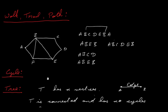A path, on the other hand, is a trail in which all the vertices are different — so you can't repeat vertices. I can go from A, B, C, D, E, F — that's a path. But I can't go A, B, C, D, E, back to B and A again, because I'm repeating B and A.